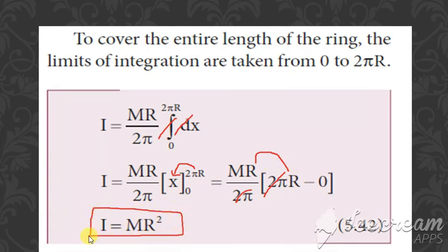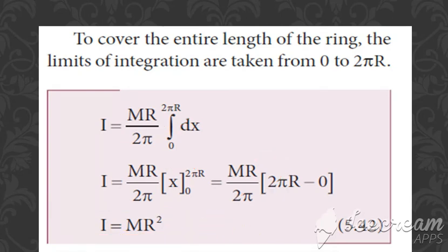So M·R·R = MR². Therefore, I = MR². This is the formula for the moment of inertia of a uniform ring. In summary, the three formulas used are: dI = dm·R²; lambda = M / (2πR); and dm = lambda·dx. Substituting these gives the final result I = MR².